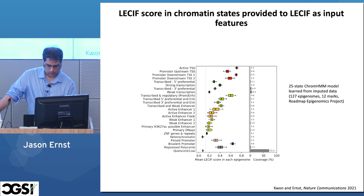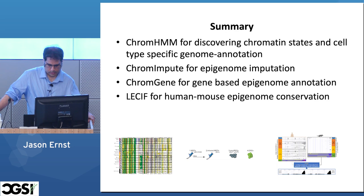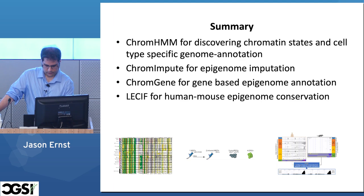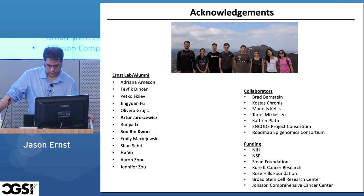To summarize, I presented ChromHMM as a method for discovering chromatin states and cell-type-specific genome annotations, ChromImpute for epigenome imputation, ChromGene for gene-based annotations, and LACIF for human-mouse epigenome conservation. I'd like to acknowledge the group, in particular the people from my lab whose work I discussed. Thank you for your attention.